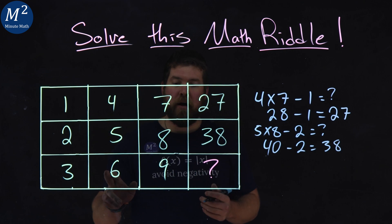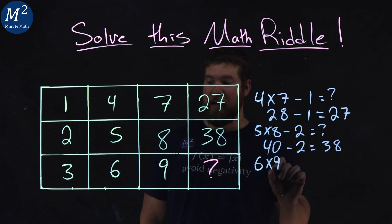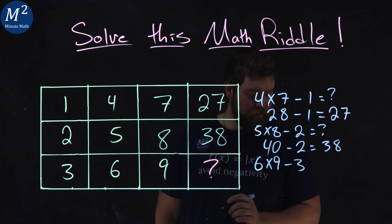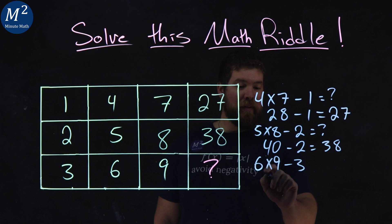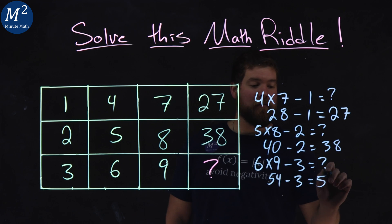5 times 8 gives me the 40 minus the 2 gives me the 38. That's what we have there. So, if I apply that process to the last one, we have a 6 times a 9 minus a 3. Well, 6 times 9 gives me that 54 minus the 3. 54 minus 3 is a 51.